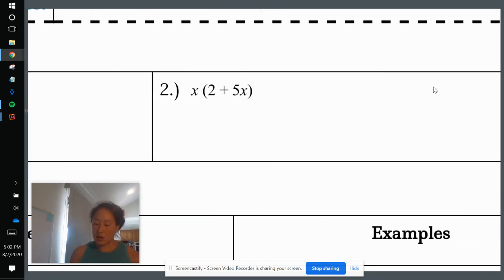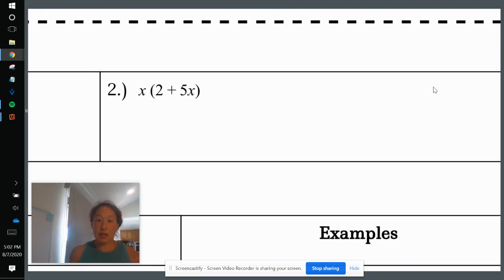So next, we have an x on the outside, so we're going to distribute those inside the parentheses, giving us x times 2 plus x times 5x. Simplify this, we get x times 2 is 2x plus x times 5x. Remember x times x is x squared, and then we just multiply it by our coefficient of 5.